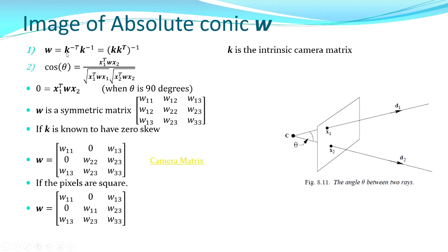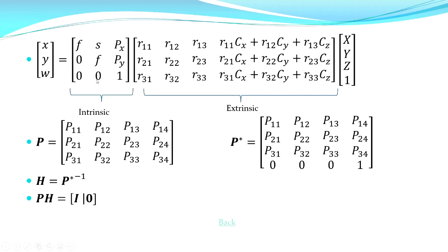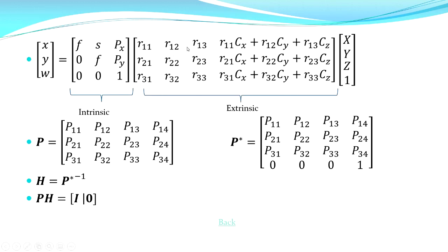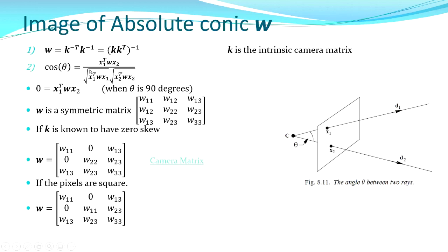So these are a few results that we have. We have ω, which is called the absolute conic. It is given by K inverse-transpose into K inverse, where K is the intrinsic camera matrix. You can see that ω is only dependent on K — it is not dependent on the rotation or translation of the camera. It is solely dependent on the intrinsic camera matrix. That is one important point to note.